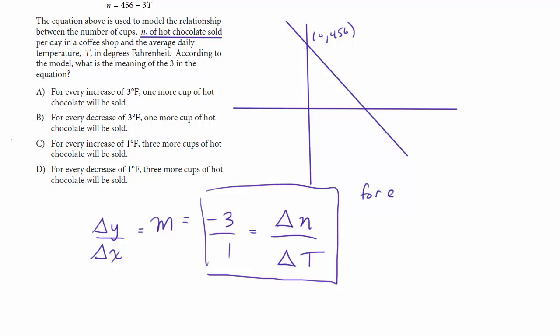So for every increase in t of 1, you have a decrease of 3 in n.